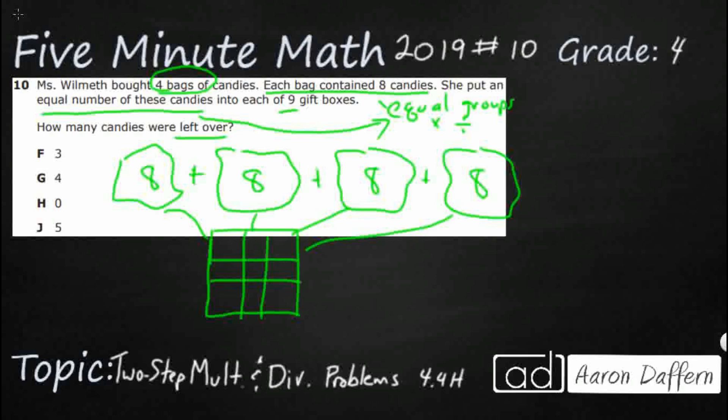So if we want, we could add eight plus eight plus eight plus eight. But we also know that that's four groups of eight. So that's going to be 32. So I've got 32 candies, basically four bags, eight candies each.